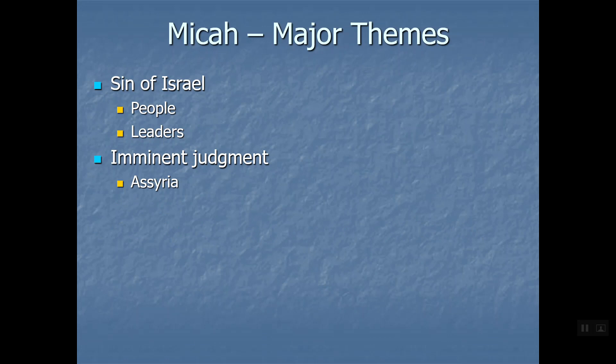Today we might wonder why we have the 12 since we're going to tell a very similar story. But next week when we get to the conclusion, we'll see what they are really bringing about that Isaiah, Jeremiah, and Ezekiel did not show. Let's start with Micah. We'll do four books today - Micah is the longer one, but Nahum is three chapters, Habakkuk is three or four, and Zephaniah is just a couple, so they're very short books.